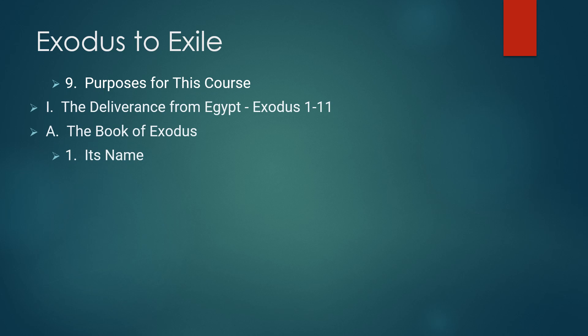Let's begin looking at Roman numeral 1: 'The Deliverance from Egypt, Exodus chapters 1-11,' and under that, 'The Book of Exodus.' The English title 'Exodus' comes from the Septuagint, which is the Greek translation of the Old Testament Hebrew around 200 BC. The title in the Septuagint is 'Exhodos,' which is the Greek phrase meaning 'exit' or 'departure.' That Greek phrase becomes the title 'Exodus' in our English Bibles through the Vulgate — the Latin translation by Jerome about 400 AD.